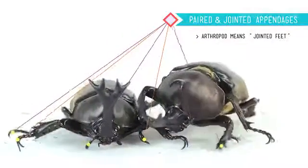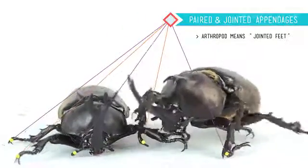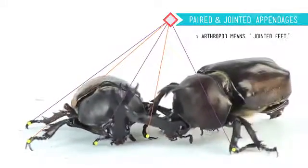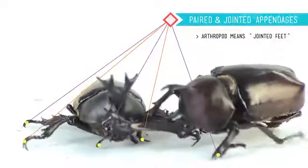Finally, they've all got paired and jointed appendages, which is actually where their name comes from. Arthropod means jointed feet. But it's not just their legs that are jointed, some of them have claws and jointed antennae, and they all have these external mouth parts that are also jointed. So that's what arthropods have in common. But they are grouped into four subphyla based on how they differ from each other.